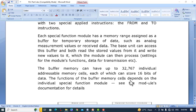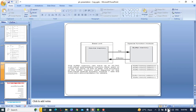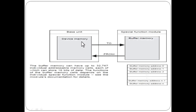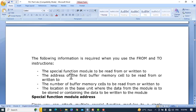The functions of the buffer memory cells depend on the individual special function module. When we want to transfer data from the PLC to the buffer memory, we will use the TO command. When we take data from the buffer memory — from the special function module or the analog to digital/digital to analog converter module — we will use the FROM command. Buffer memory addresses go from address 0, address 1, address 2, and so on.